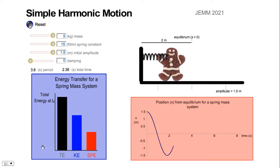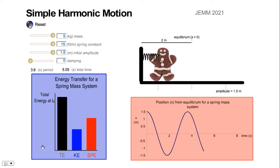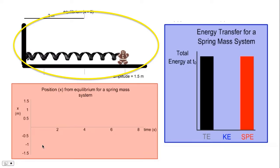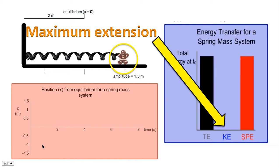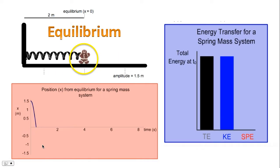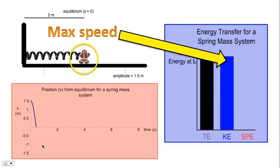Notice when spring potential energy is maximum, and also notice when kinetic energy is maximum. When we're at maximum extension, we have maximum potential energy. This is because at maximum extension the speed of the object is zero, therefore the kinetic energy is zero. Next, at equilibrium, the spring potential energy is zero — by definition, if a spring is not extended or compressed, it cannot store spring potential energy, and that's the situation when we're at equilibrium. At equilibrium, we have maximum speed, therefore we have maximum kinetic energy.